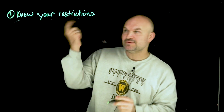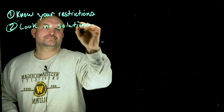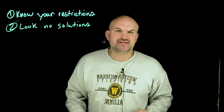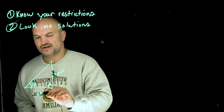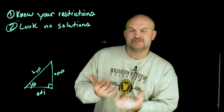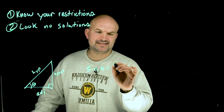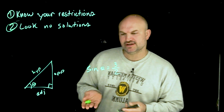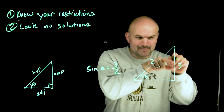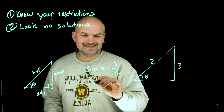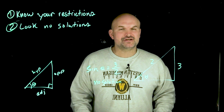Tip number two is to look for no solutions. Something really important about trigonometric functions: in a right triangle, the hypotenuse is always larger than the opposite and adjacent sides. So if I write sine of an angle and get a ratio like 3 over 2, drawing that triangle shows the opposite side would be larger than the hypotenuse — which is impossible. Therefore, any time sine or cosine of a value is greater than one, there is no solution.